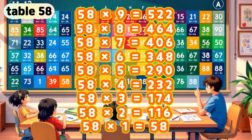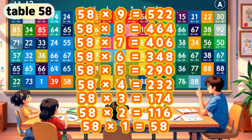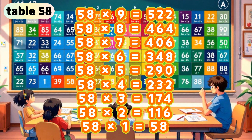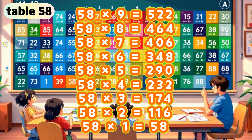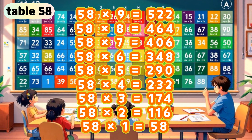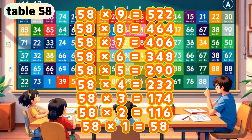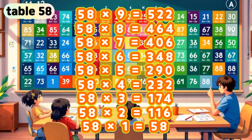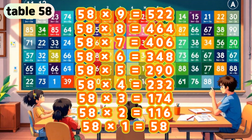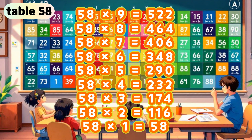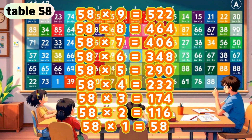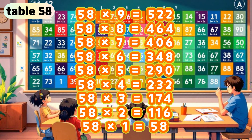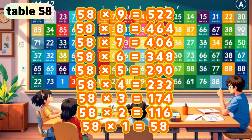Table 58. 58 times 9 is 522. 58 times 8 is 464. 58 times 7 is 406. 58 times 6 is 348. 58 times 5 is 290. 58 times 4 is 232. 58 times 3 is 174. 58 times 2 is 116. 58 times 1 is 58.